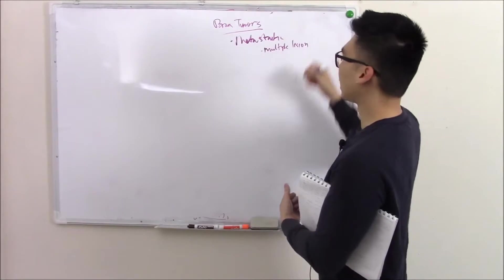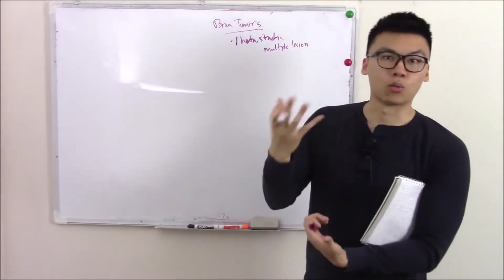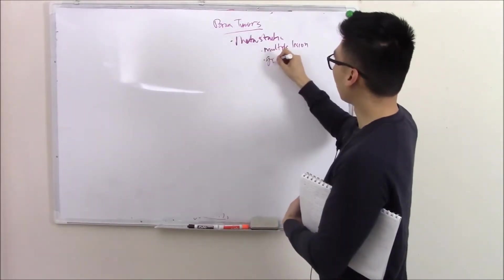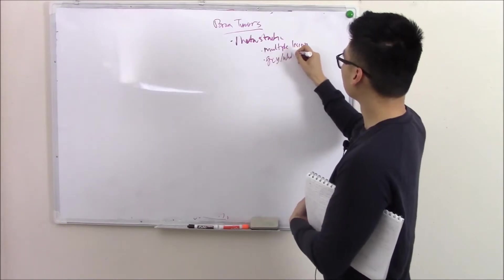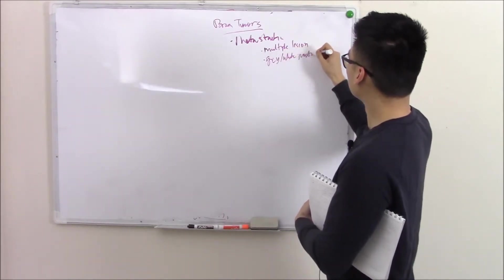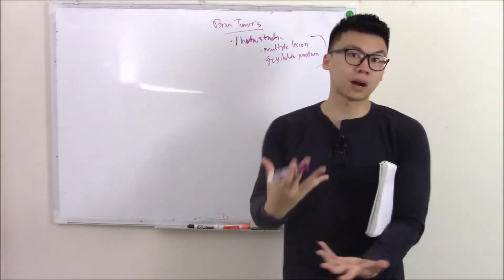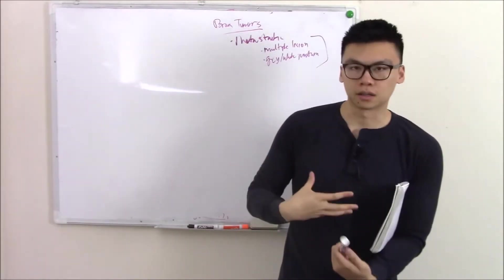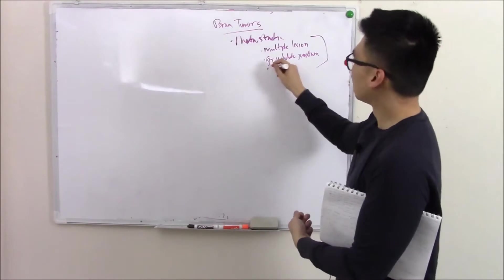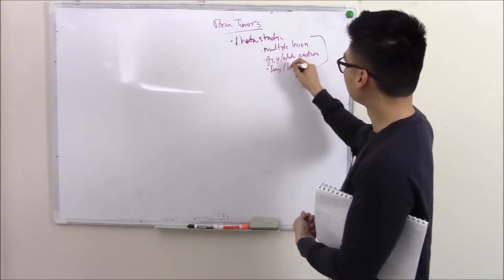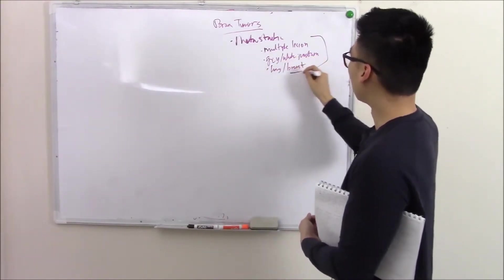And they seem to really like the junction between the gray and white matter. It's the gray-white junction. And if you see that, you know it's metastatic cancer and then you have to find out what's the primary source. Usually things like lung, things like breast are your primary sources.